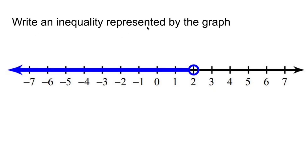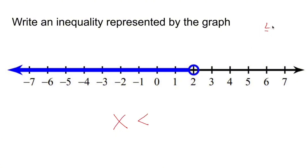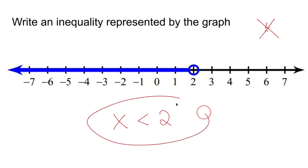Write an inequality represented by the graph. In order to have an inequality, we need a variable. If my variable is on the left side, the arrow is going to tell me which inequality symbol to use. Since this is going to the left, that means I care about everything less than. Now I look at the circle — is it filled in? No. So you are not going to use 'or equal to.' Since it's circled at 2, my inequality is going to be x is less than 2. Done.